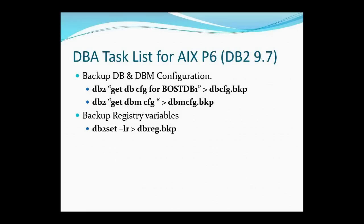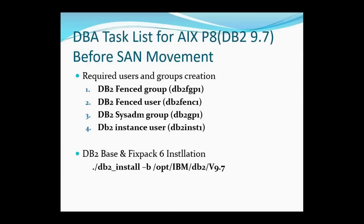The DBA task list for the AIX P8 machine involved creating an almost identical server to the AIX P6 box. The required users and groups for DB2 were created: DB2 fenced group DB2fgp1, DB2 fenced user DB2fenced1, DB2 sysadmin group DB2gp1, and DB2 instance user DB2inst1. The same users and groups were created as on P6. We then proceeded with the DB2 base and fenced pack 6 installation on the AIX P8 box using the DB2 install command with the provided path.